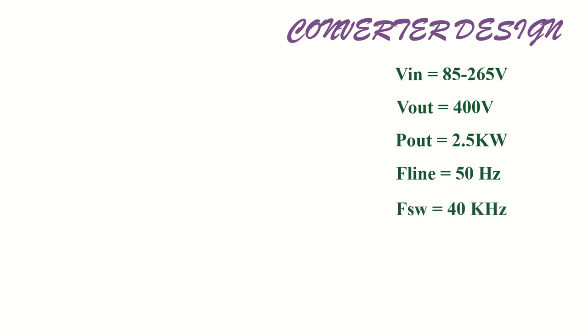Now we will see how to design the converter. Before that I will give you the specification. Input voltage range is 85 to 265 volt RMS. Output voltage is 400 volt. Rated power is 2.5 kilowatt. Line frequency is 50 hertz. Switching frequency is 40 kilohertz. Current ripple is 30 percent. Voltage ripple is 1 percent. And efficiency is 95 percent.